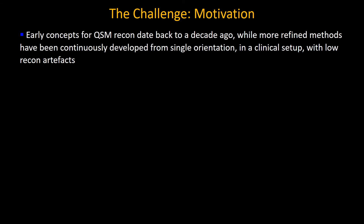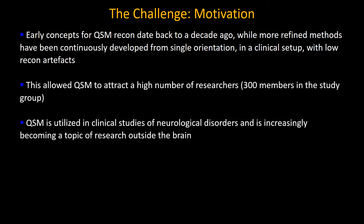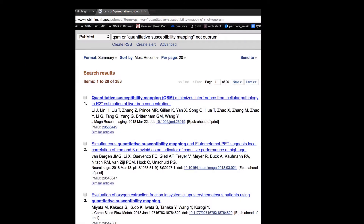Early concepts for QSM reconstruction date back to a decade ago, and more refined methods have been continuously developed to allow reconstruction from single-orientation data in a clinical setup with low reconstruction artifacts. This allowed QSM to attract a high number of researchers — we currently have 300 members in the EMTP study group. QSM is utilized in studies of neurological disorders and is also being used outside of the brain, and a simple PubMed search shows more than 300 papers on this topic.